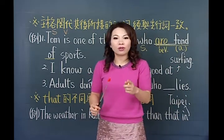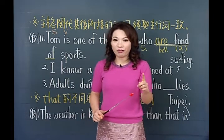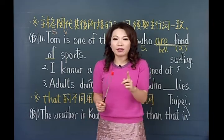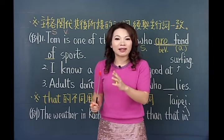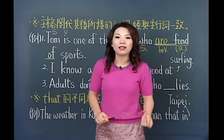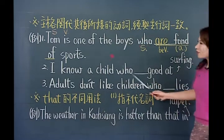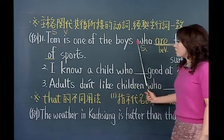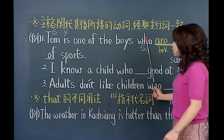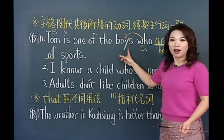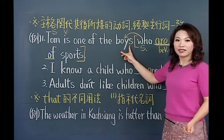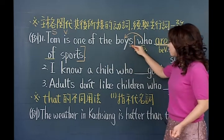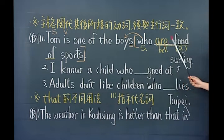关系代名词代替的是谁？就是放在它前面的那个名词，也就是先行词。比如I have a friend who lives in Paris，这个who指的就是friend。所以请问这里的who指的是汤姆吗？不是。who指的是谁？前面的先行词，who指的是boys，是复数，所以当然用are。动词的单复数要看主词的脸色，主词who指boys是复数，所以用复数动词。